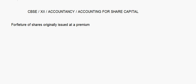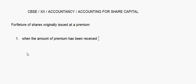Let's take up forfeiture of shares today - specifically forfeiture of shares originally issued at a premium. When shares are issued at a premium, there can be two cases in forfeiture of shares originally issued at premium. The first case is when the amount of premium has already been received.